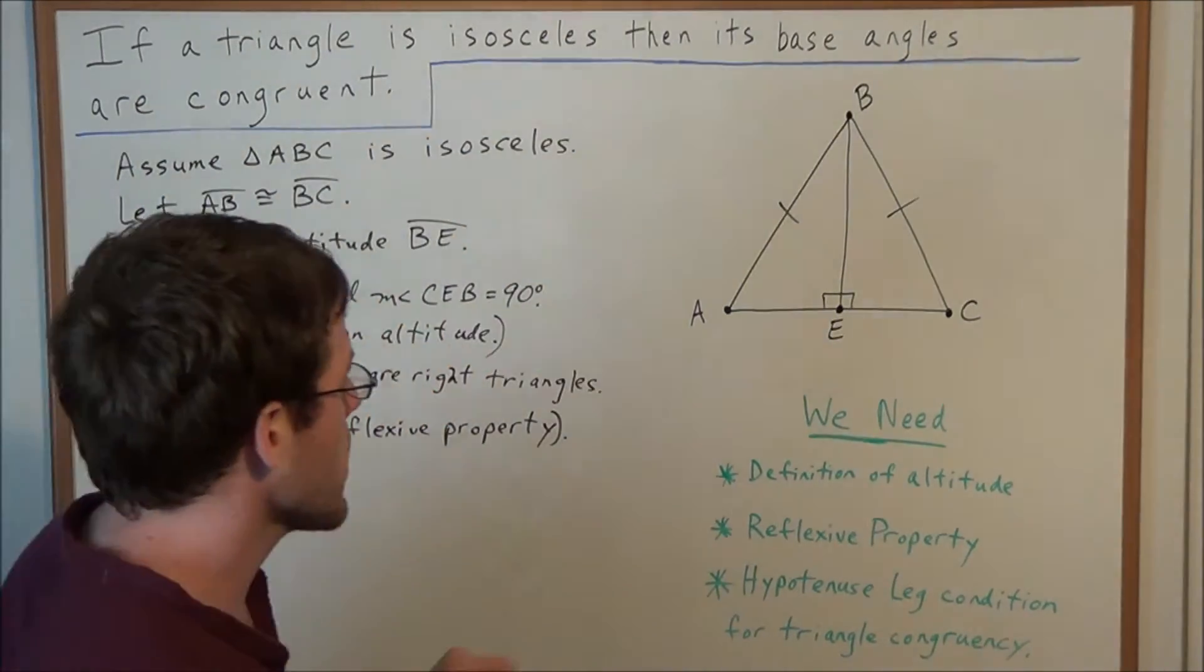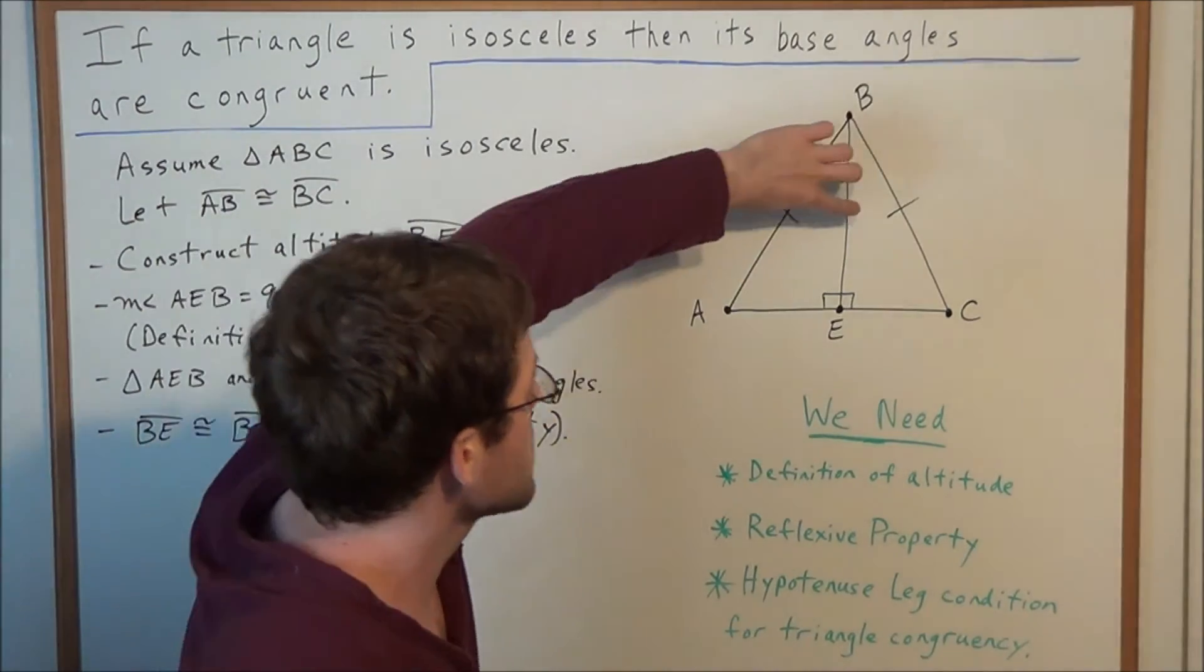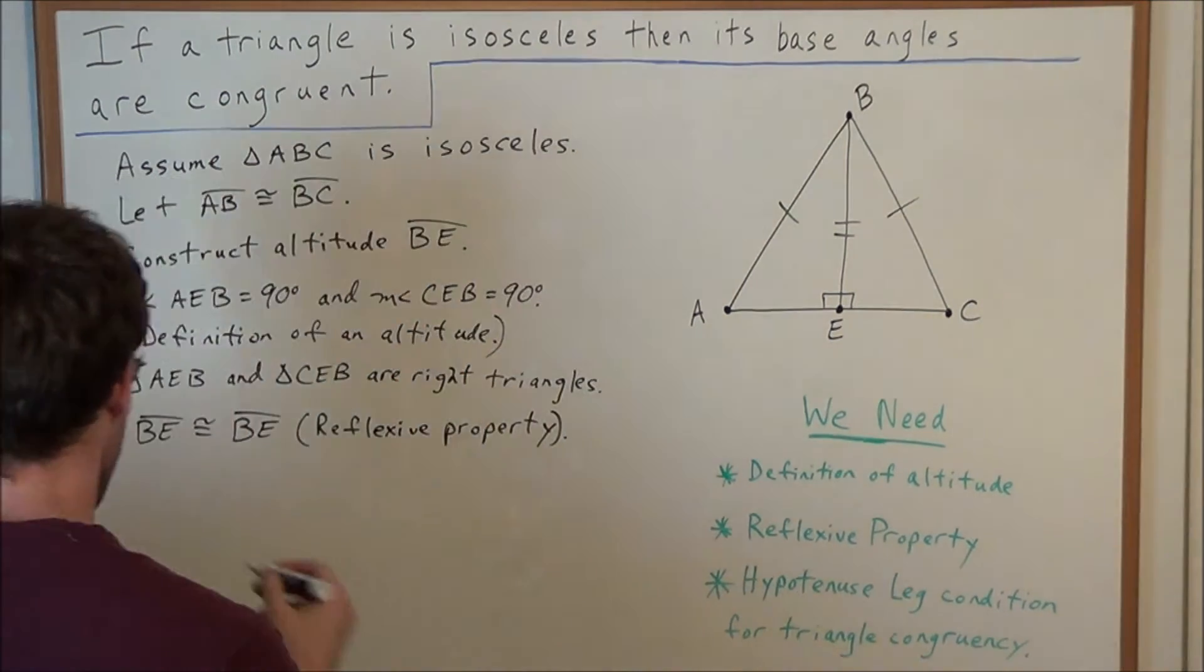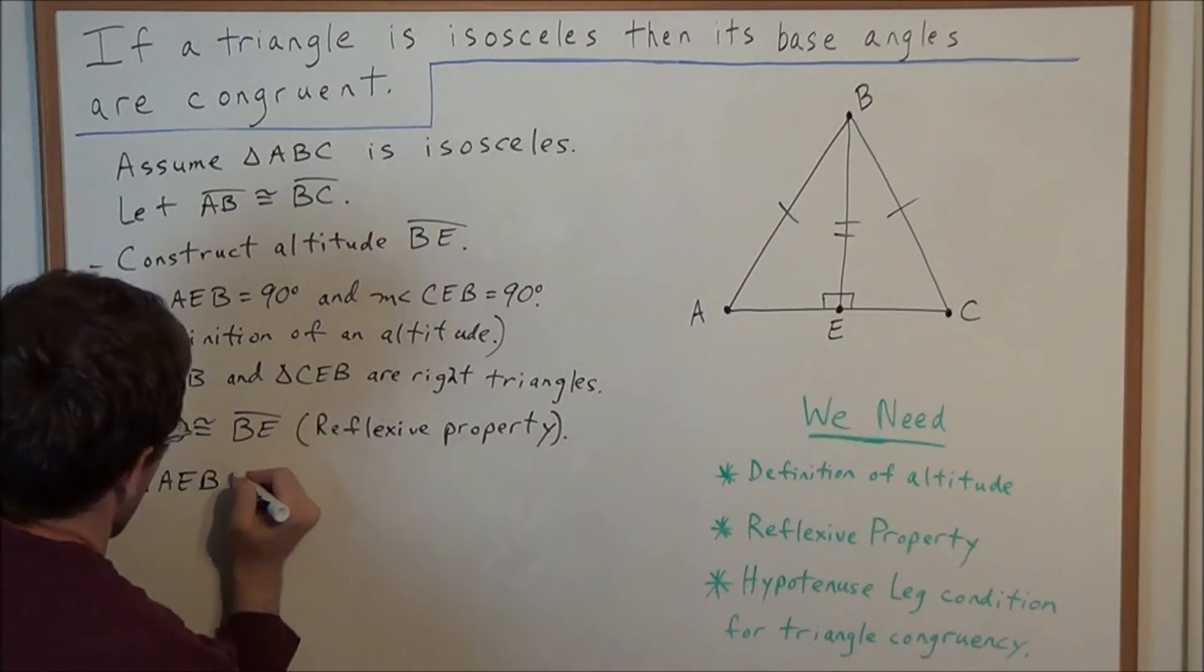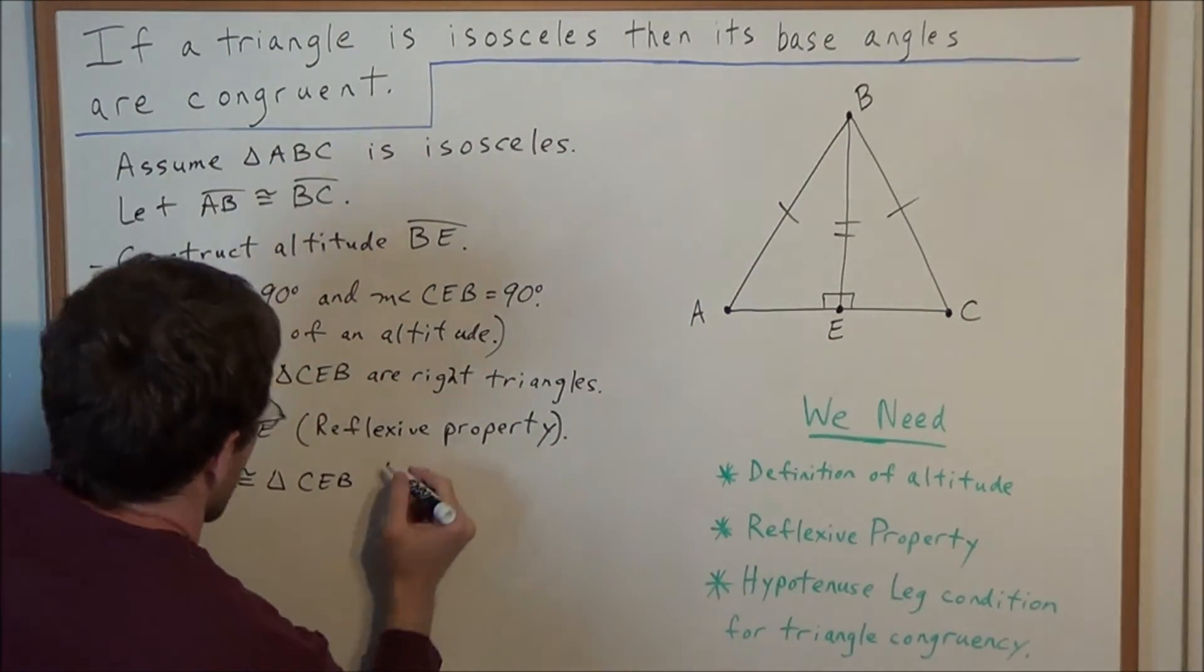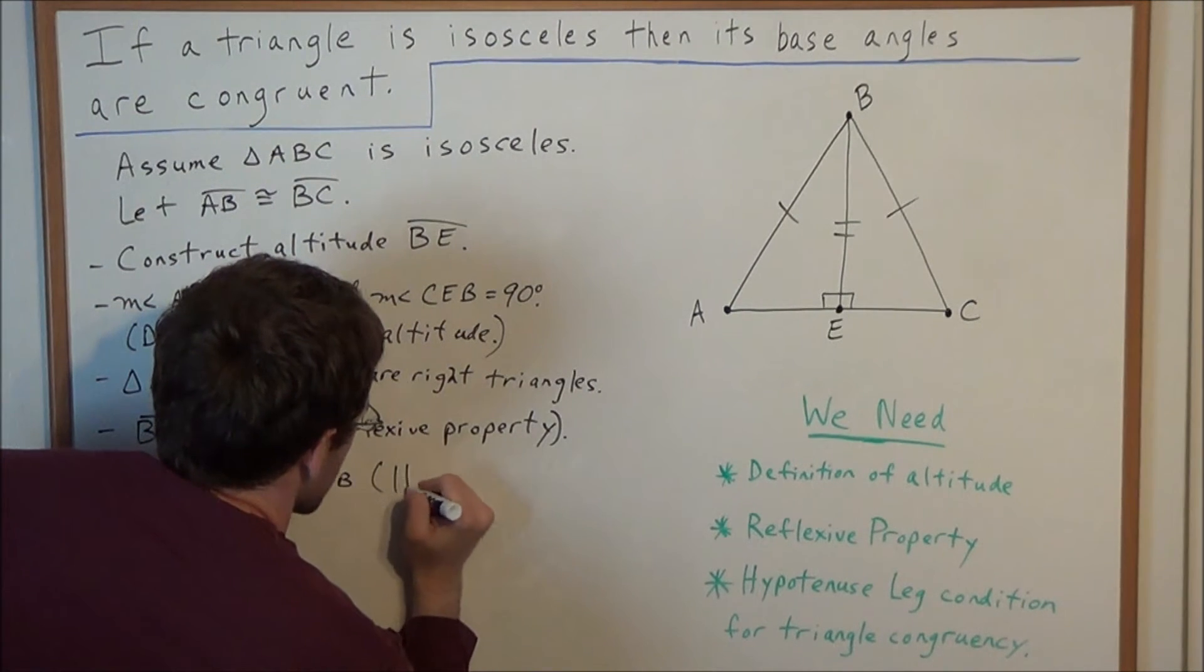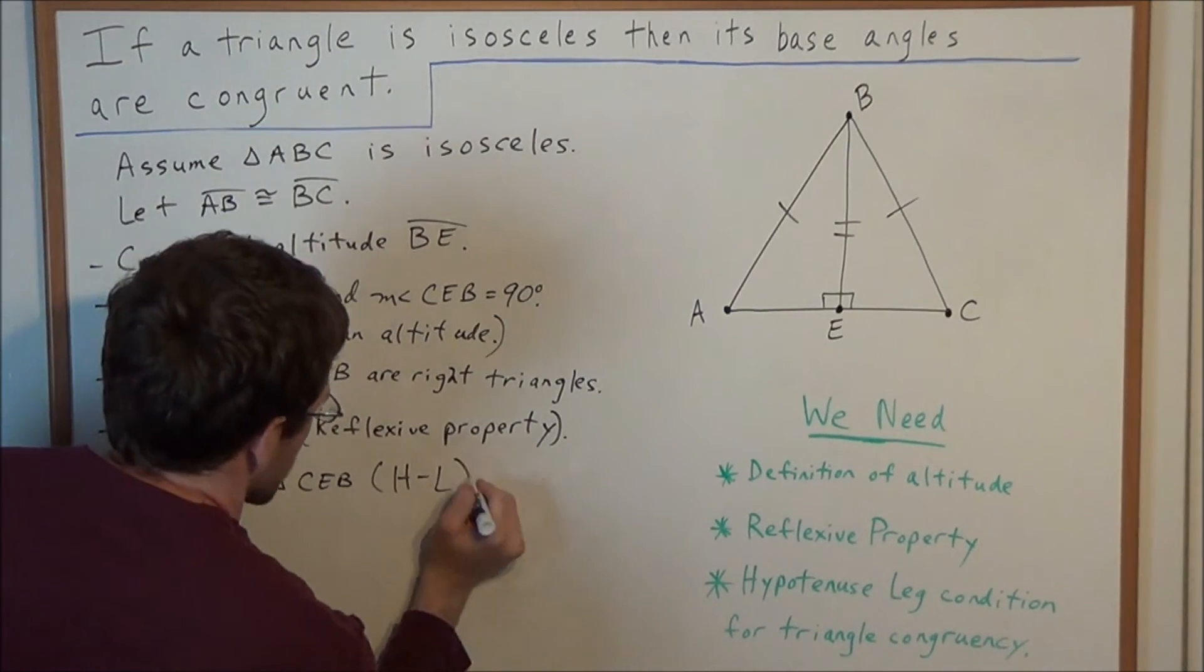But now, what does this allow us to say? Well, we have two right triangles, and they share the same hypotenuse, and they share the same leg. So, this allows us to say that triangle AEB is congruent to triangle CEB. So, these two triangles are congruent, and the reasoning for this, I'll just abbreviate the hypotenuse leg condition for triangle congruency.